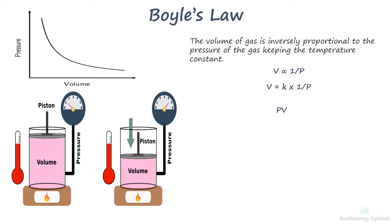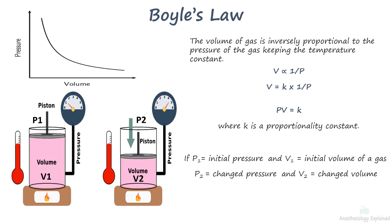Since temperature is constant, pressure multiplied by volume is equal to constant. Finally, if P1 and V1 are the initial pressure and volume of a gas, and P2 and V2 are the changed pressure and volume, we can write as P1 V1 equals P2 V2. This relationship is very useful to determine the volume of any gas at any given pressure in the cylinder.